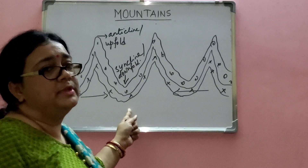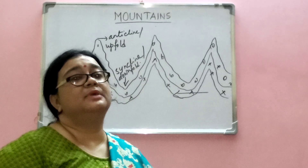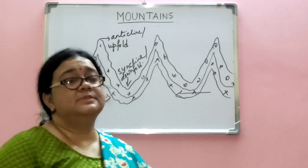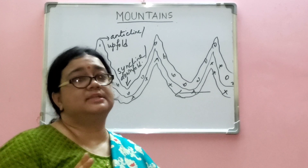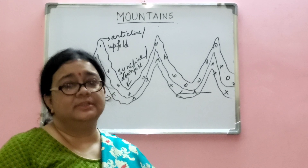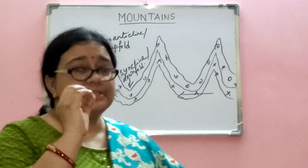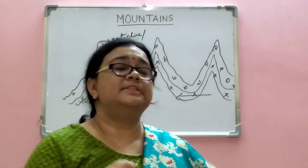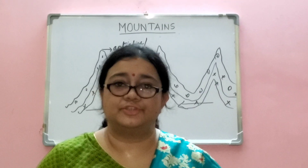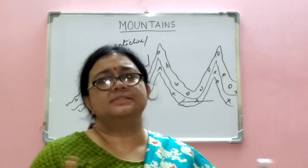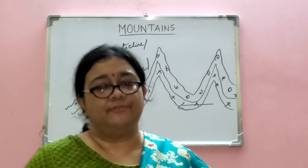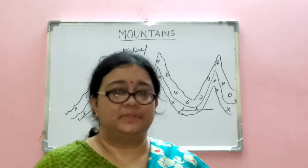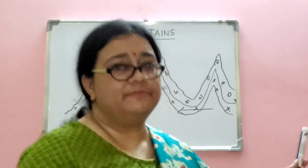Fold mountain formation always takes place at the margins of plate boundaries. When two tectonic plates collide with each other, the edges of the plates get folded and the sediments buckle up, giving rise to the formation of fold mountains. That is a brief description of fold mountains.